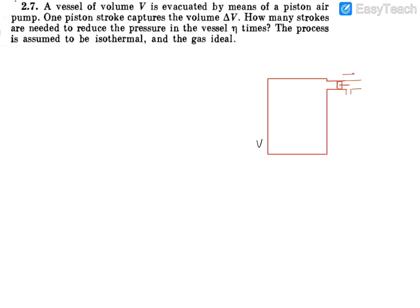If we take this piston from inside, it will be closed. So this piston is moving like this — when it goes out, it is able to collect gas. How much gas is in one stroke? It is delta V. So delta V goes out in one stroke. The initial pressure, let's call it P0. The pressure will decrease.